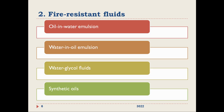Coming to the fire resistant fluids — suppose there are fire hazards in the hydraulic system or nearby. We may have to choose from these kinds of hydraulic oils: oil in water emulsion, water in oil emulsion depending on the oil-water proportion, water glycol fluids, and synthetic oils. These are the different types of fire resistant fluids.